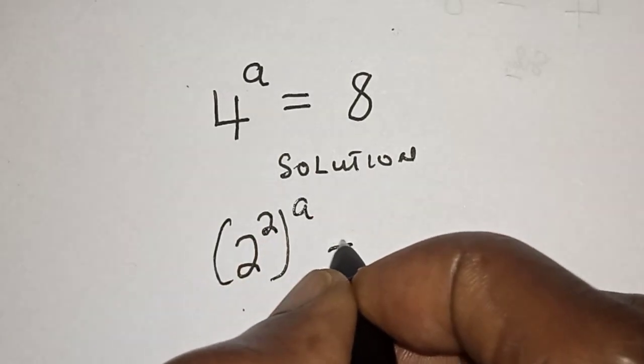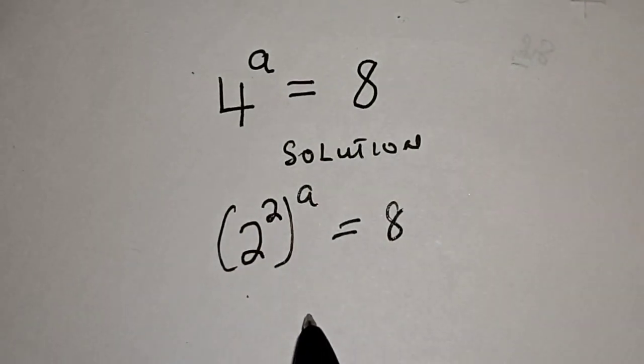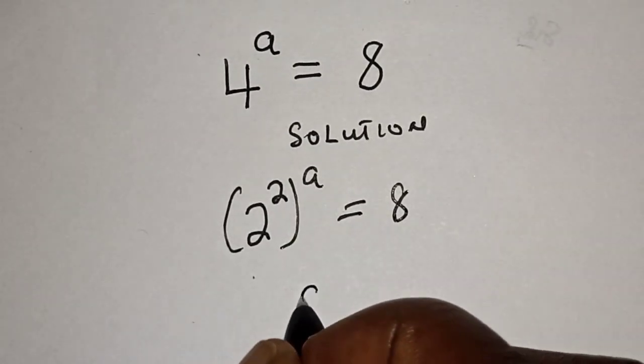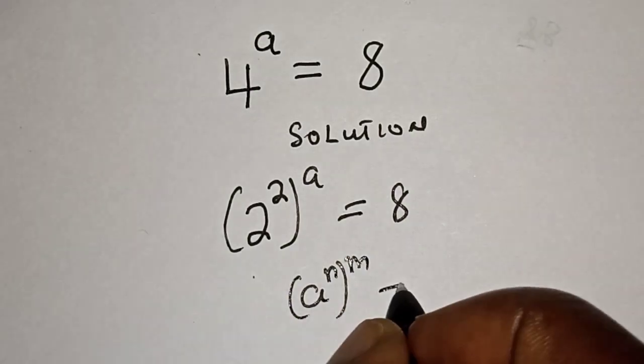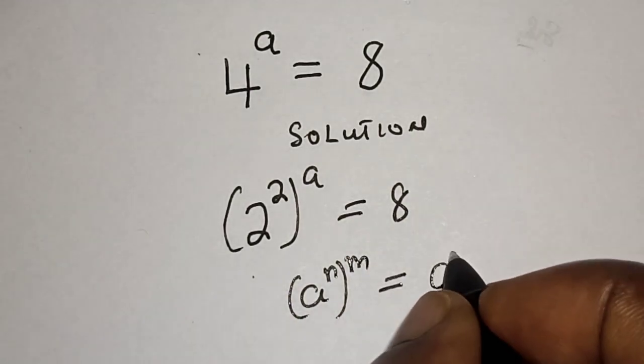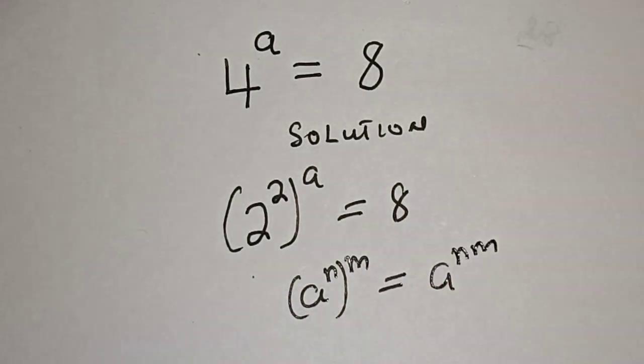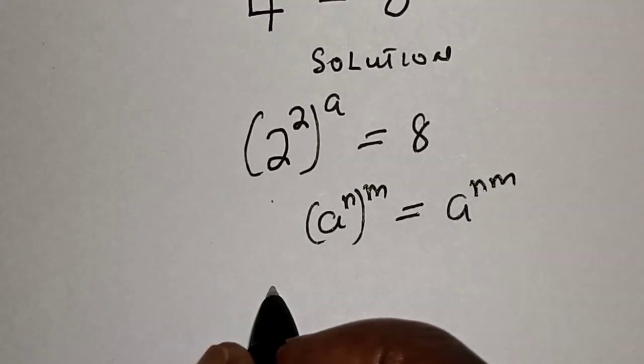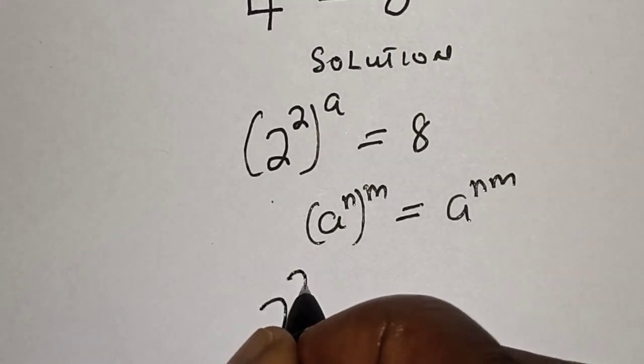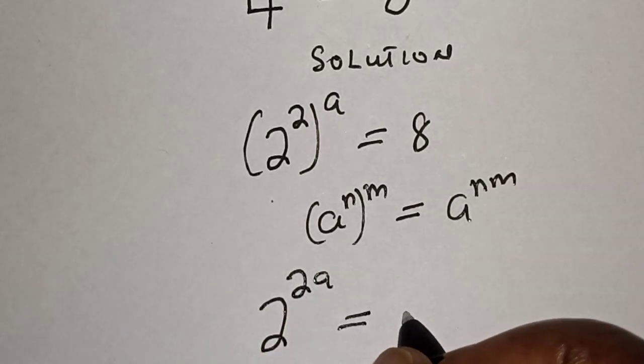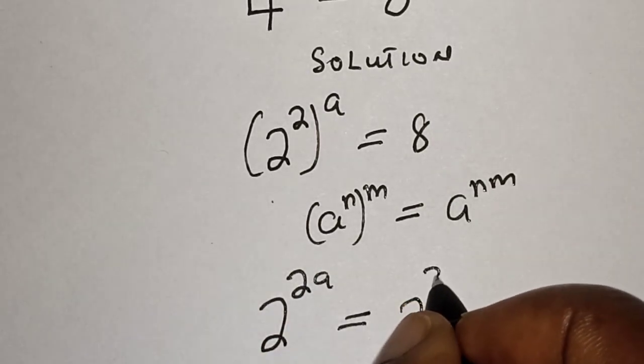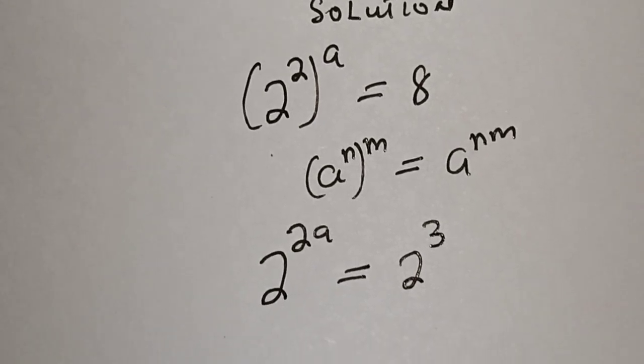This is equal to 8. Now take note of this rule: a raised to power of n raised to power of m is equal to a raised to power of nm. Then this is 2 to the power of 2a is equal to—8 can be written as 2 to the power of 3. Now they have the same base 2.